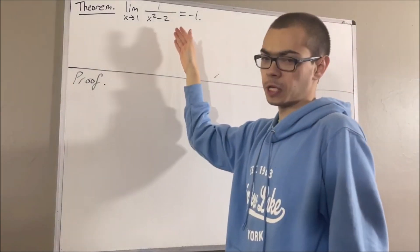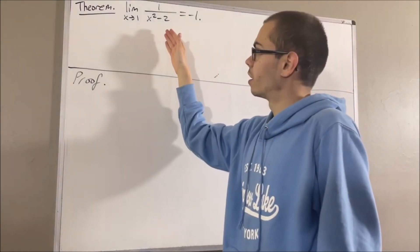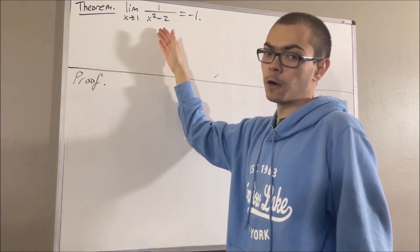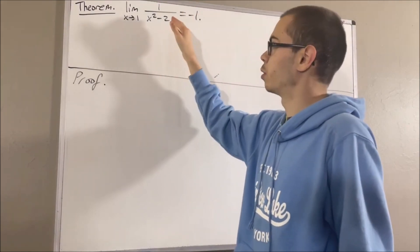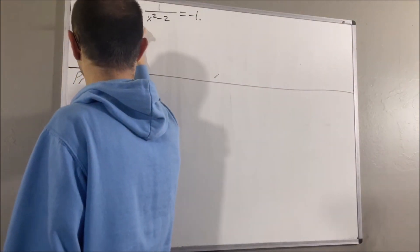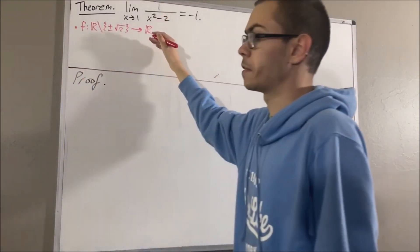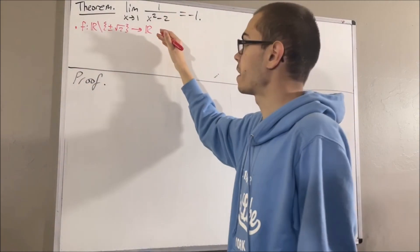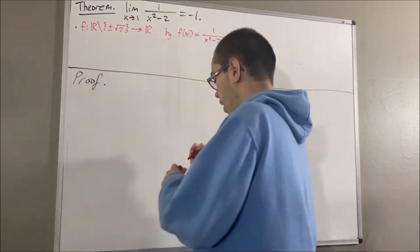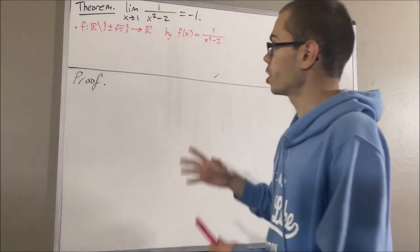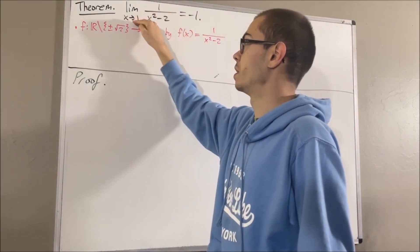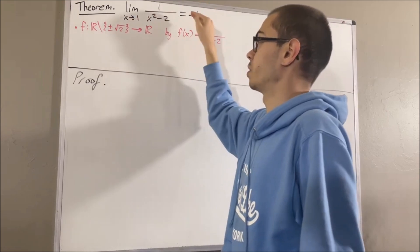We're dealing with the limit of a function. Our function could have the domain of all real numbers excluding plus or minus square root of 2, and our function is defined by f of x equals 1 over x squared minus 2. We want to prove that the limit of our function as x approaches 1 is equal to negative 1.